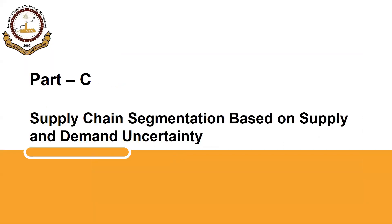As-salamu alaykum and welcome back. In Part B we discussed supply chain strategy, its four levels of evolution, and six important components of supply chain strategy. In Part C we will discuss the types of supply chains based on supply and demand uncertainty.